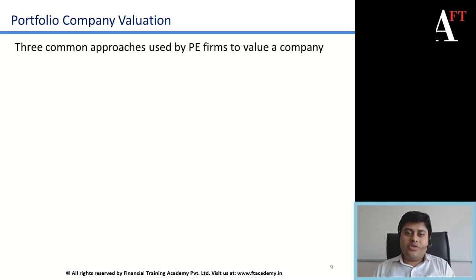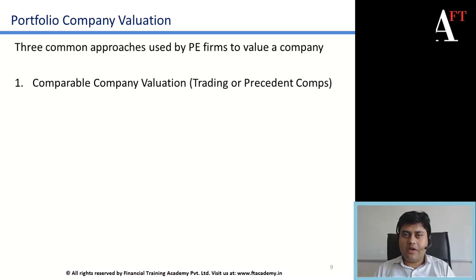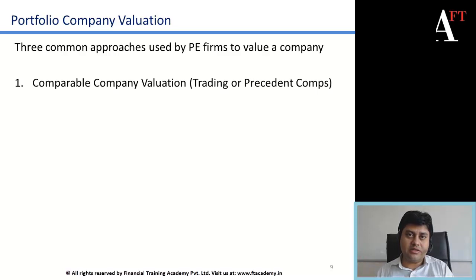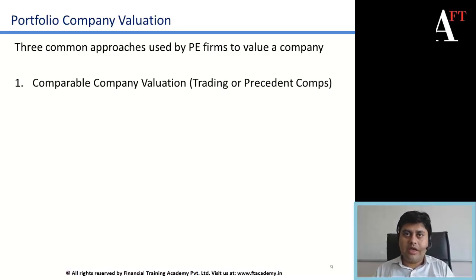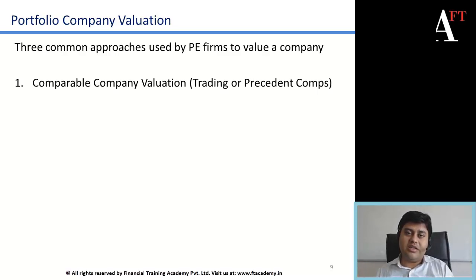The three most common approaches used by PE firms to value a target or investee company are: first, comparable company valuation, where you compare your target company's business to a similar publicly listed business and arrive at certain trading multiples — such as price-to-earnings, enterprise value to EBITDA, or enterprise value to EBIT multiples. You then adjust for the unique characteristics of the target company and apply that revised multiple to the target's financial metrics to arrive at its value.